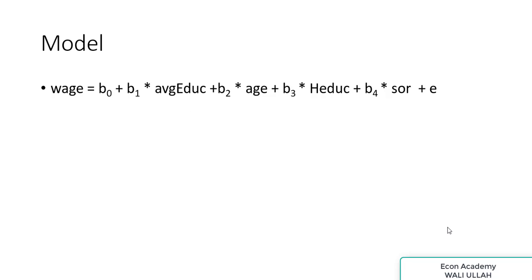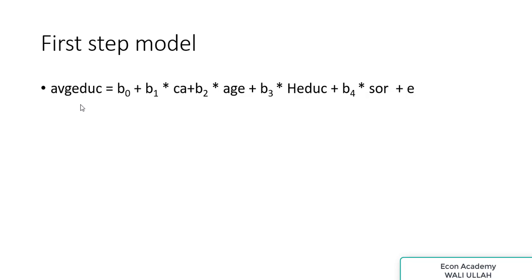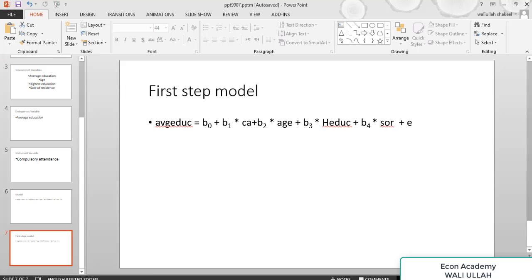My model is wage as a dependent variable and average education, age, highest education, and state of residence as independent variables. First we will run our first stage model, in which we will keep average education — the endogenous variable — as the dependent variable and run a regression using the instrumental variable along with all the other independent variables. Now I will show you how to do this estimation in Stata.